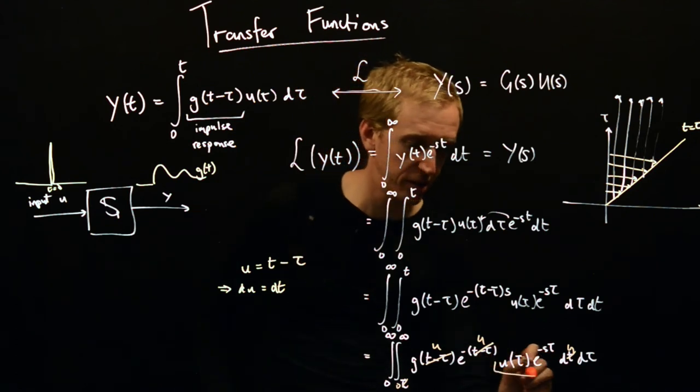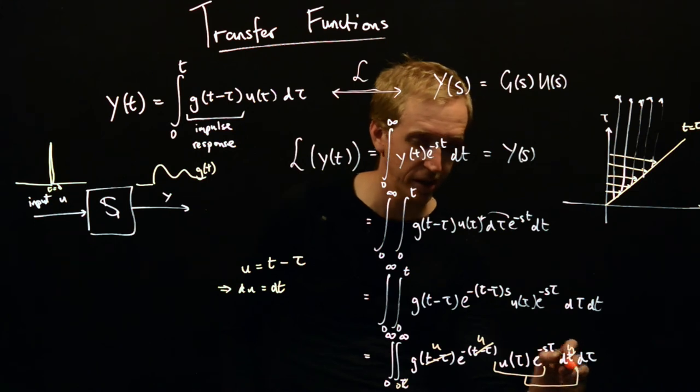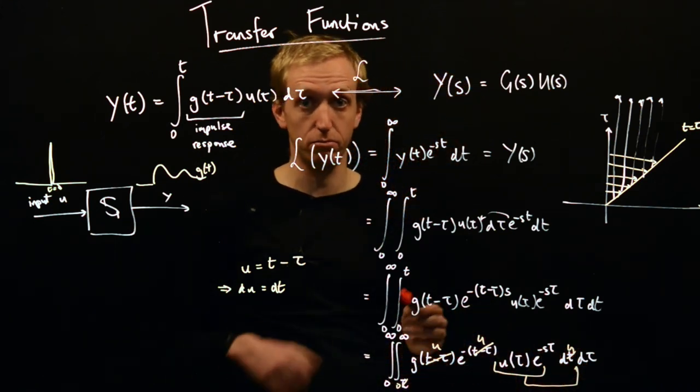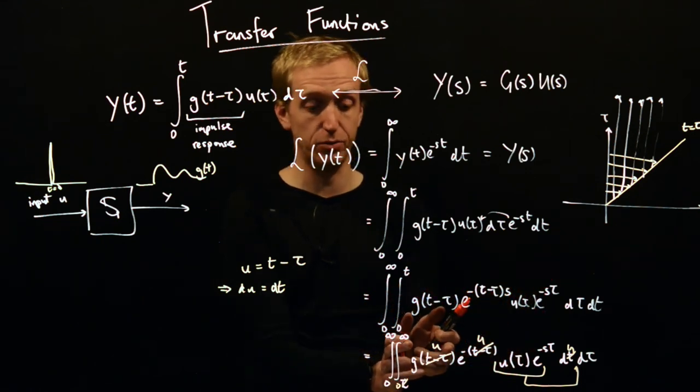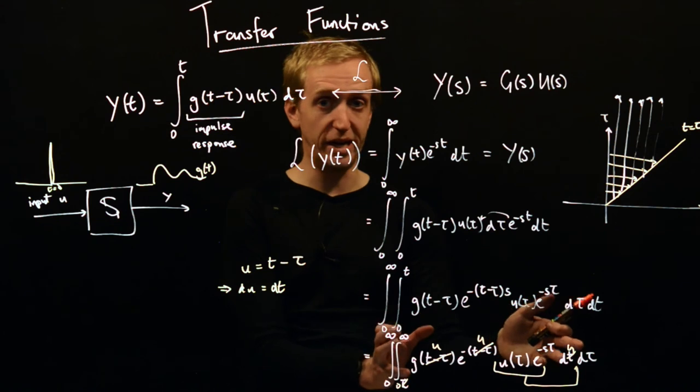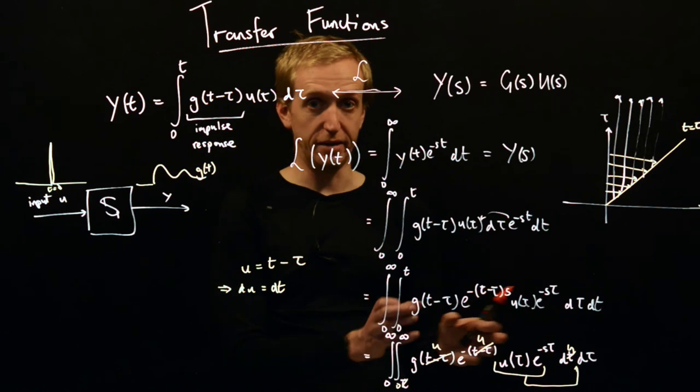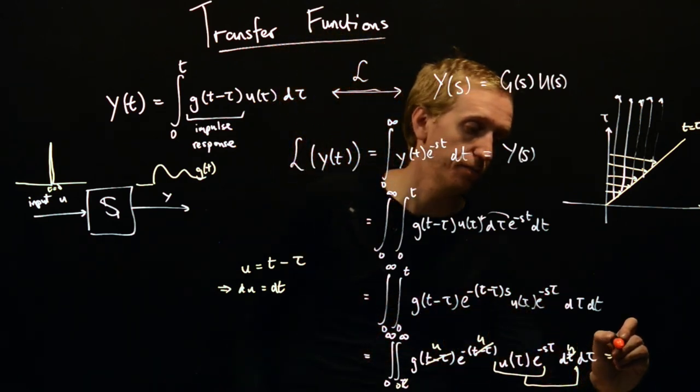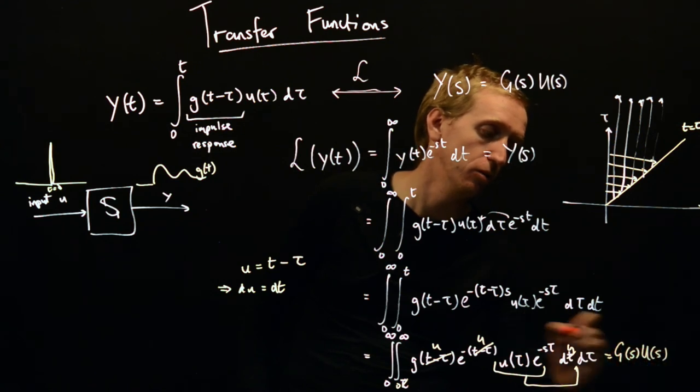Now we see that this is just constant with respect to u so we can pull it here and this is now just the definition. The inner integral is just the definition of the Laplace transform of g and then the remaining one is the definition of the Laplace transform of u and they'll just be multiplied together. So this is equal to g of s u of s.